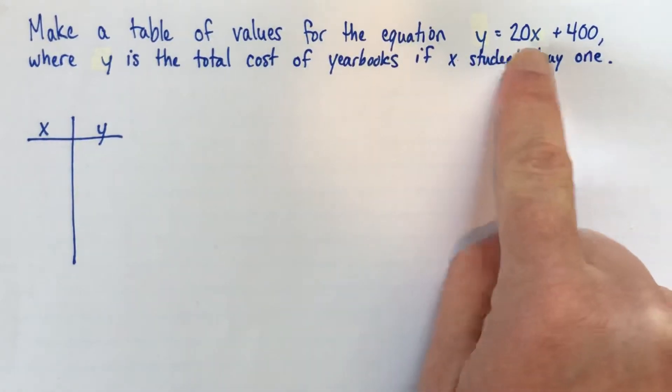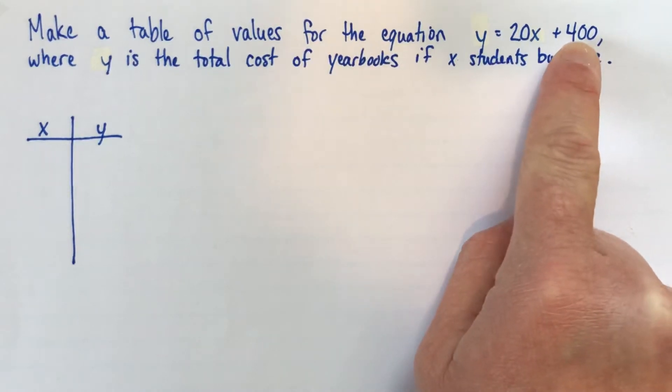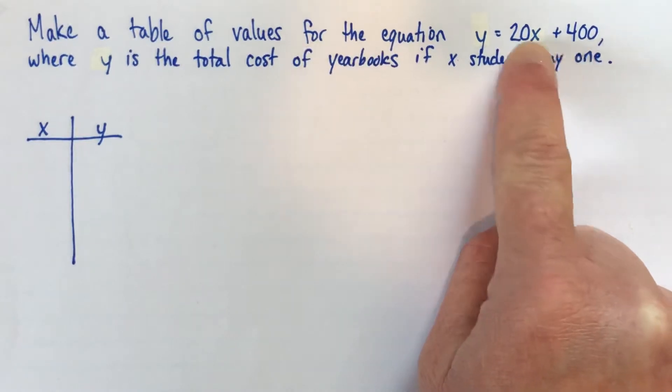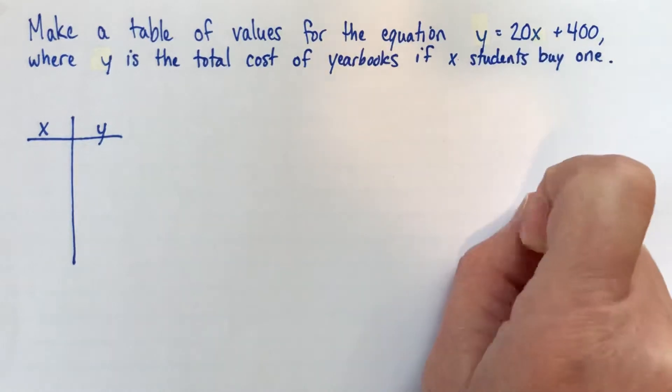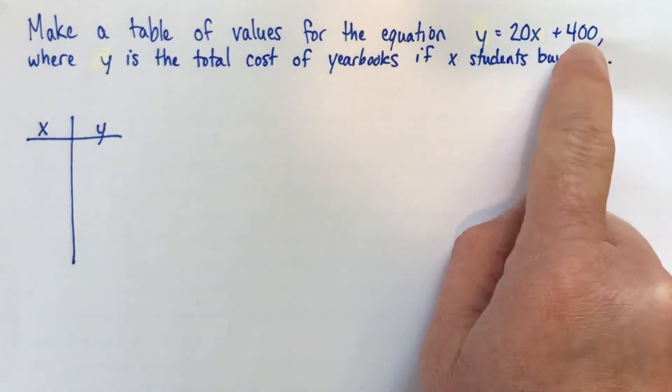So if we look at this equation, it looks like it costs $400 just for any number. So maybe there's a setup for the printing press, and that costs $400. That's a fairly common kind of situation with printing. And then we multiply how many students buy a yearbook times 20. So it looks like the cost of each yearbook is $20. So $20 each plus this $400, we just have to pay once, whether it's one student who buys one or hundreds of students.